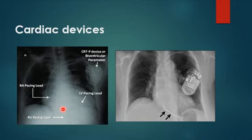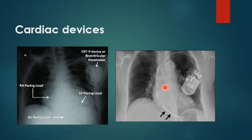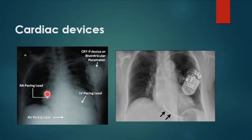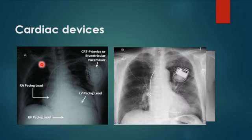The defibrillator usually has three leads and the pacemaker has two leads. An important distinction: there is something called the shock coil — it appears as a thick, radio-opaque wire and is only found in defibrillators. If you see a device with three leads and don't know if it's a pacemaker or defibrillator, look for this thick radiopaque wire. If present, it is a defibrillator, which shocks the heart during arrhythmia. The biventricular pacemaker has three leads but no shock coil, as it paces during bradycardia. Some defibrillators have two shock coils — one in the right atrial appendage and one in the right ventricle.